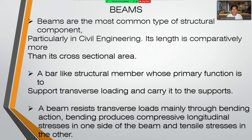Beams are the most common type of structural component, particularly in civil engineering. Their length is comparatively more than their cross-sectional area. A beam is a structural member whose primary function is to support transverse loading and carry it to the supports. A beam resists transverse loads mainly through bending action. Bending produces compressive longitudinal stresses in one side of the beam and tensile stresses in the other.